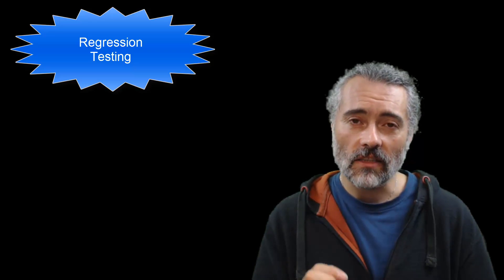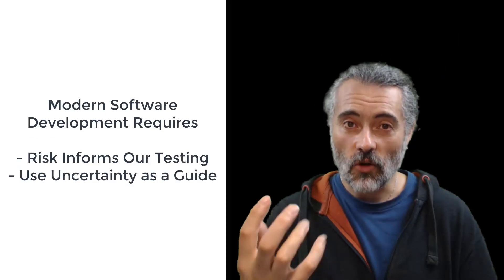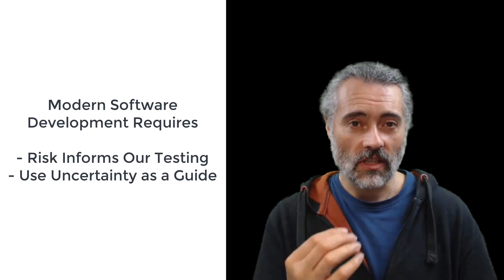In the modern age of software development, we have to do better than this. We have to get back down to the notion of risk as informing our testing, looking at the uncertainty around that risk to try and identify how much we need to test this. Because when we test, we're trying to reduce uncertainty.